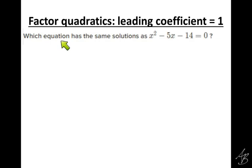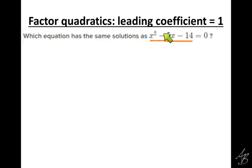It says which equation — equation meaning it has an equal sign — has the same solutions as this. What we're going to do is factor the left side. The name of the topic is factoring quadratics, leading coefficient equals 1. The leading coefficient, the first coefficient, is 1 — it's implied. If there is no coefficient written, we remember that it is a 1 there.